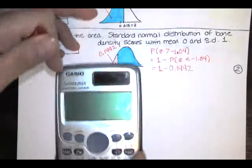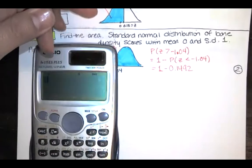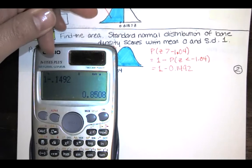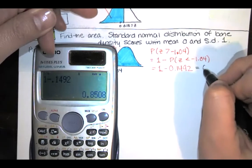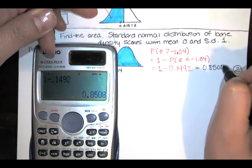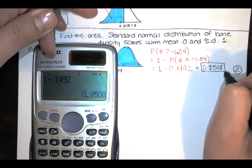So we will subtract, easy breezy, and you get 0.8508 and that's our area.